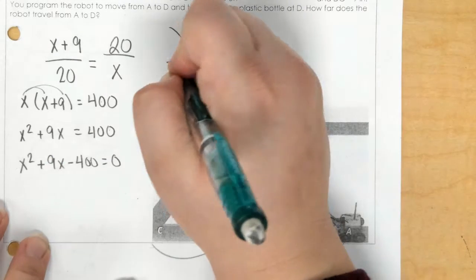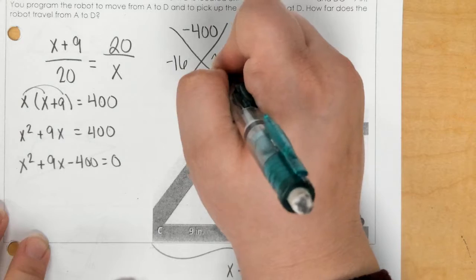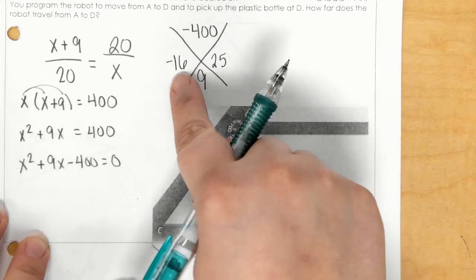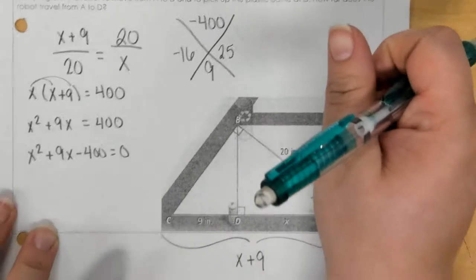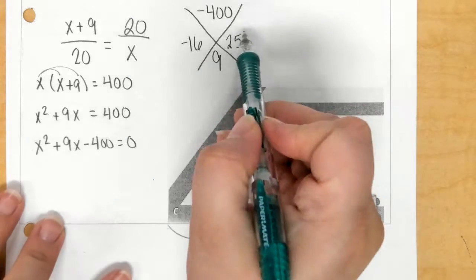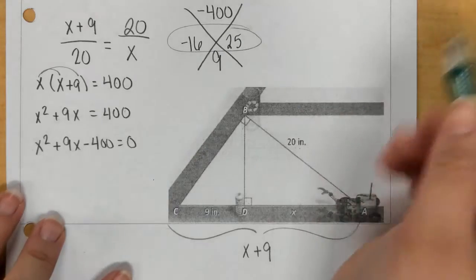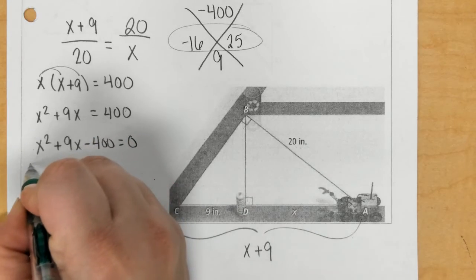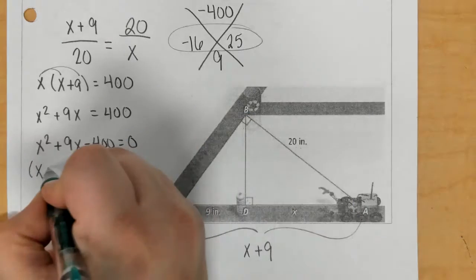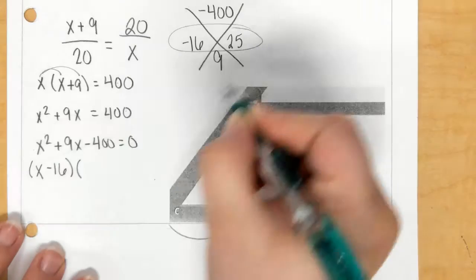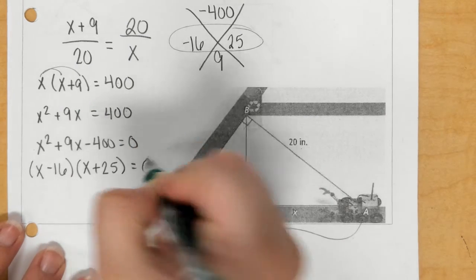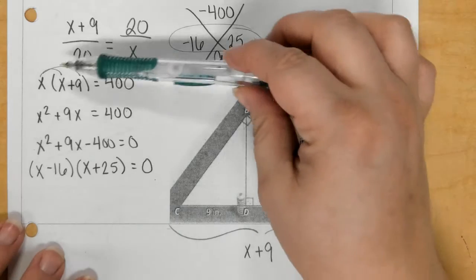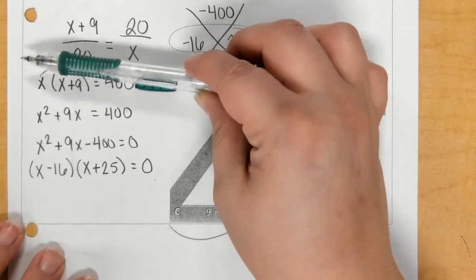And I will tell you those two numbers are negative 16 and 25. 25 minus 16 is 9. 25 times negative 16 is negative 400. So, now, what you do is you take these two numbers and you make them basically like factors. So, you say X minus 16, X plus 25 equals 0. So, basically, what you have done from here to here is just factoring.